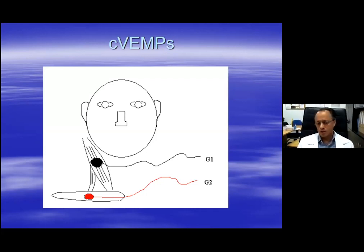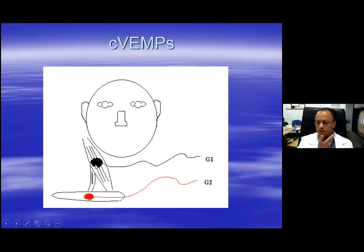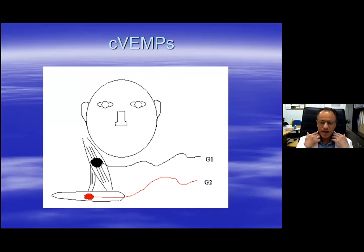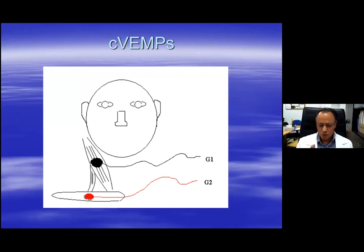The setup to record cervical vestibular evoked myogenic potentials is simple — everything is from the skin surface. The active electrode is placed on the middle of the sternocleidomastoid muscle, which you locate by asking the patient from a lying-down position to lift their head up from the pillow. The active electrode is placed in the middle or upper one-third, but usually in the middle. The reference electrode is placed on the clavicle, and the ground either on the forehead or on the sternum. There are publications that use alternative electrode setups, but this is the setup used by the majority of those who work in the field.